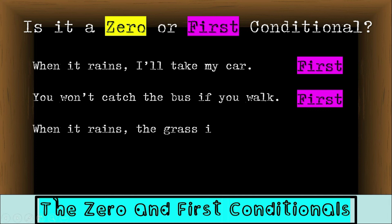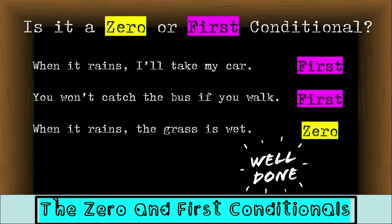When it rains, the grass is wet. Is this a factual sentence in the conditional or is it possible? This is a fact, so therefore it is the zero conditional. Thank you very much for listening today, and well done.